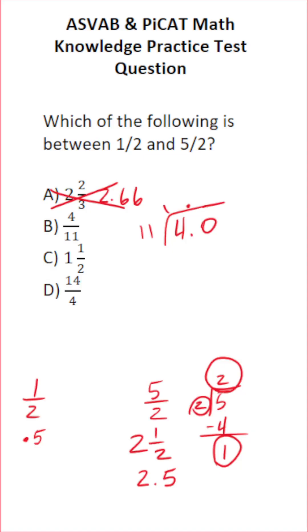11 did not go into 4, so put a zero here if you'd like. How many times does 11 go into 40? 11 times 3 is 33. 11 times 4 is 44, so this has to be 3 times. So we know that 4 over 11 is 0.3-something. 0.3-something is too small, so this is not between 1½ and 5 over 2.